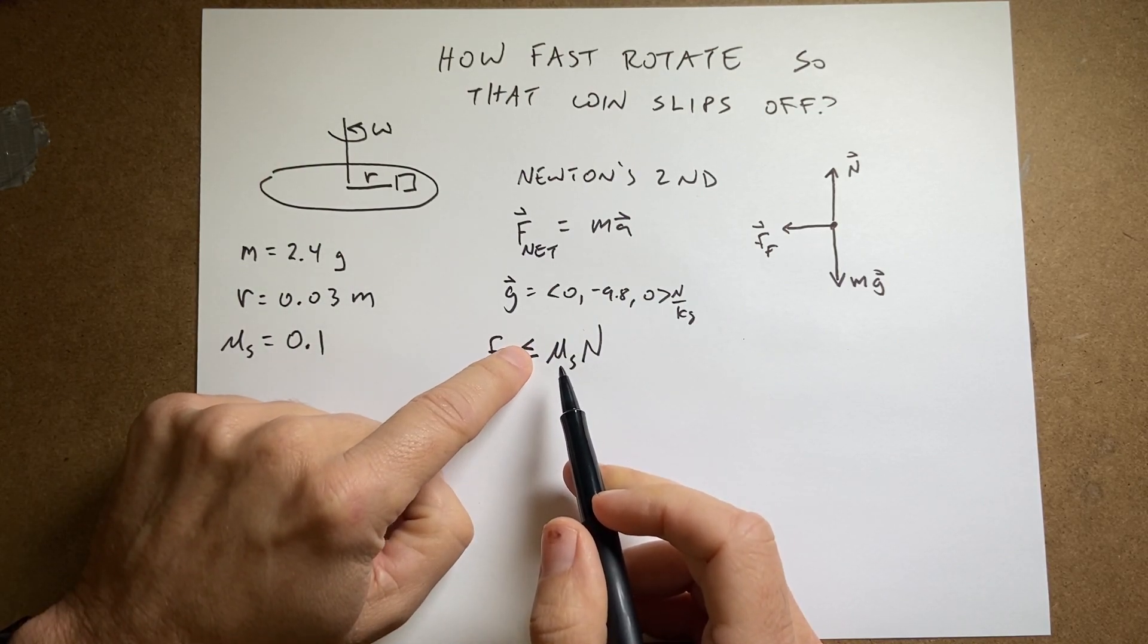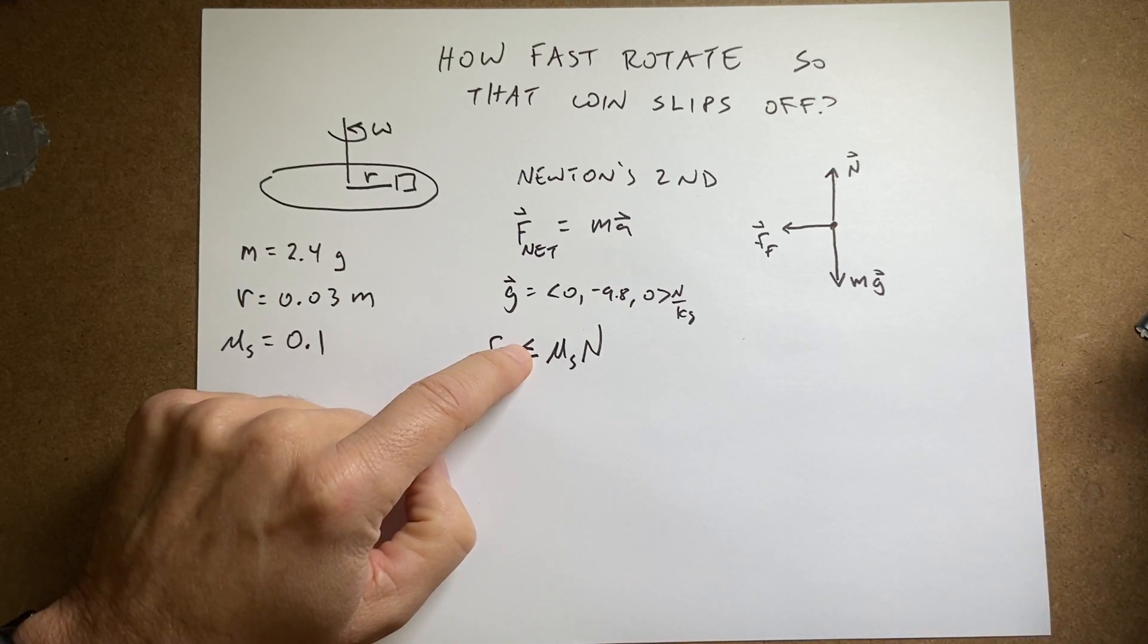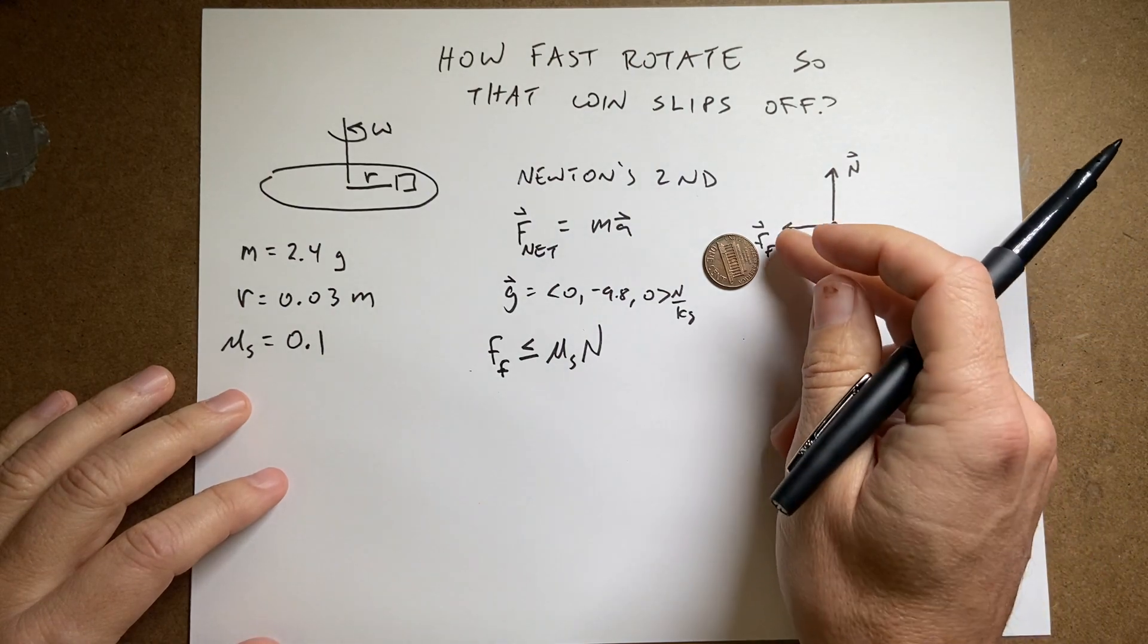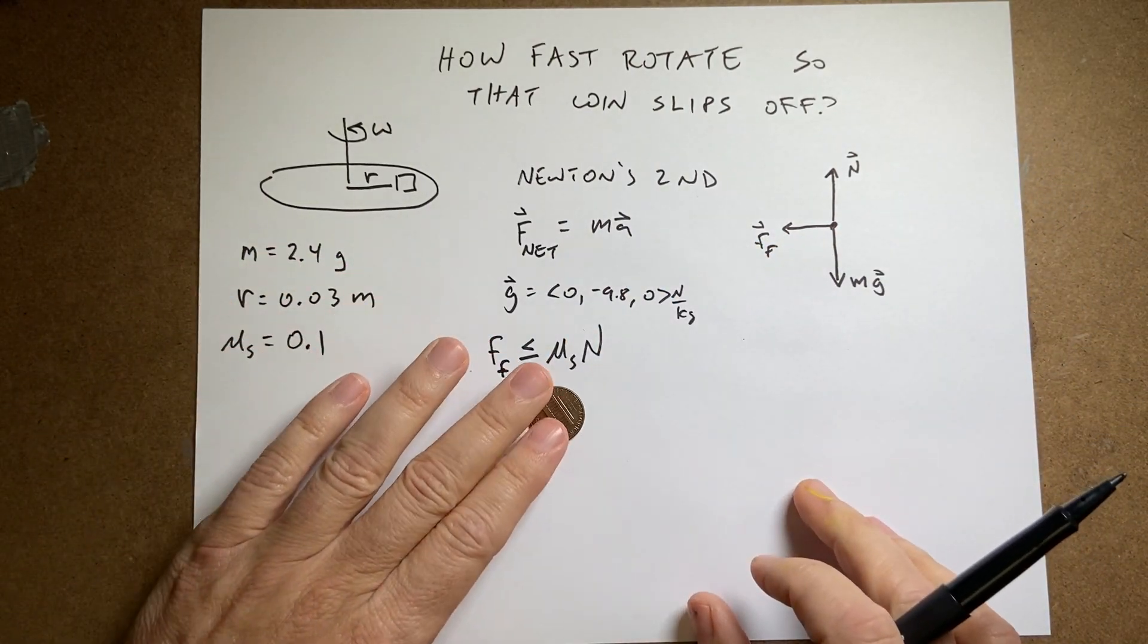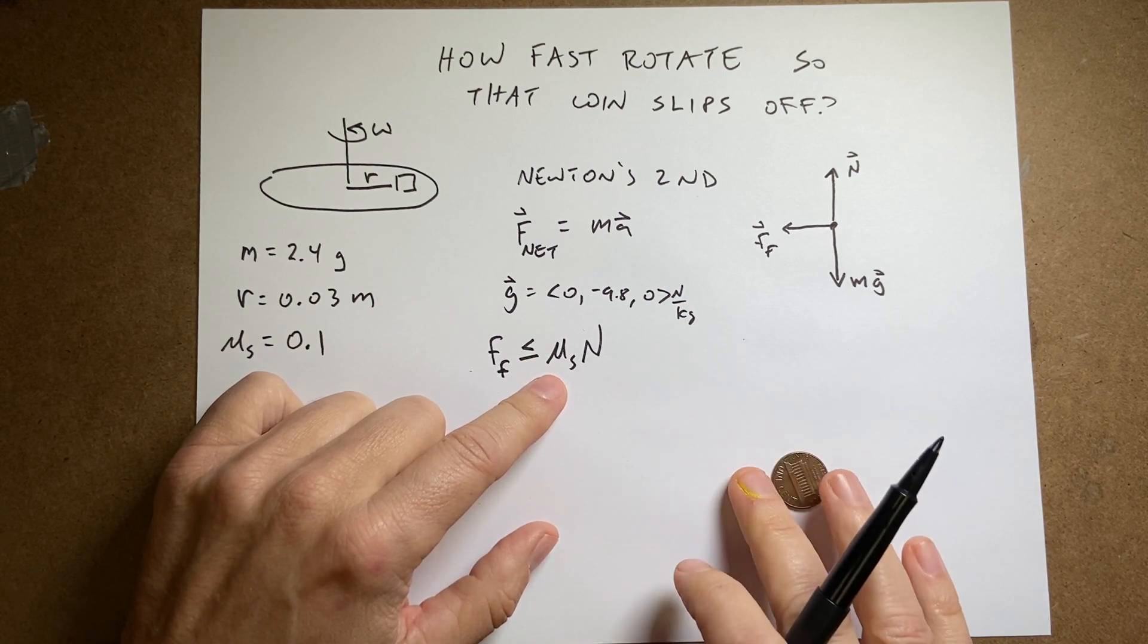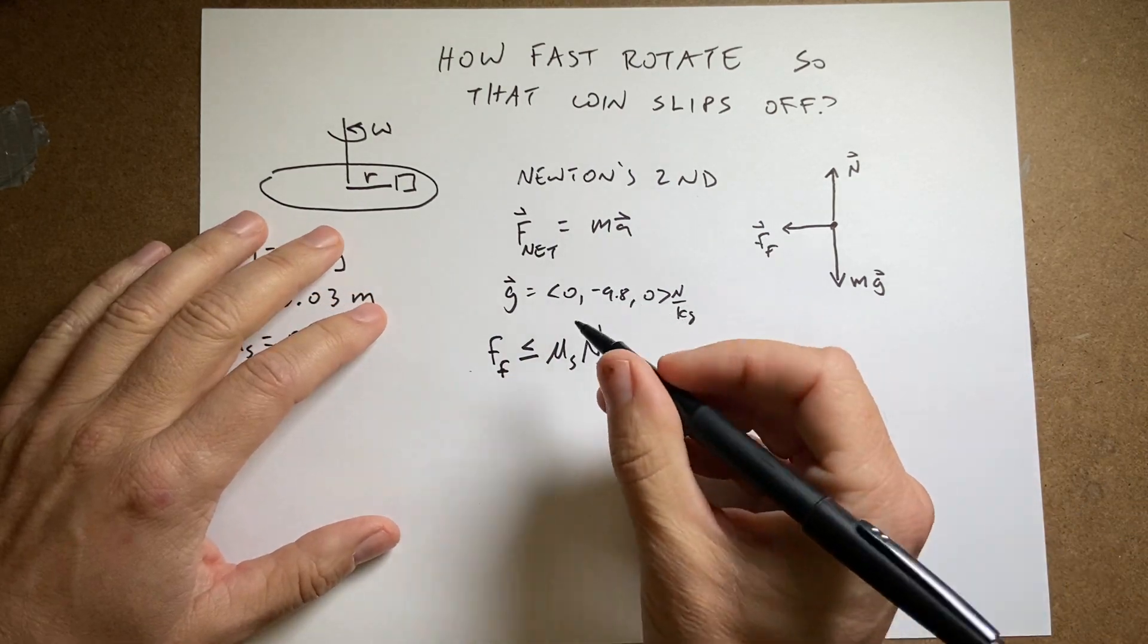And the less than or equal to is because if this penny is just sitting there, there's obviously not a friction force pushing to the side or it would accelerate. So this gives you actually the maximum friction force that you can have from the static friction, which is what we want.